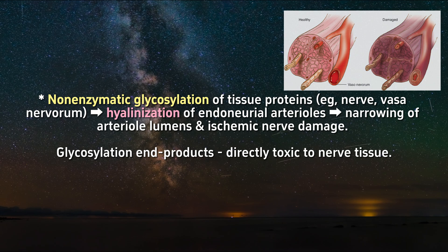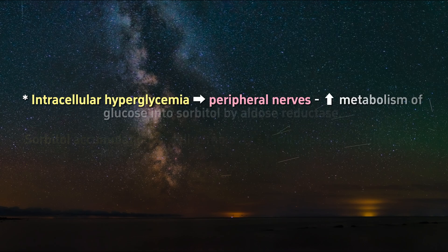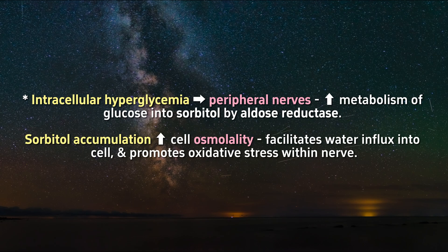Additionally, glycosylation end products are directly toxic to nerve tissue. Intracellular hyperglycemia in peripheral nerves results in increased metabolism of glucose into sorbitol by aldose reductase. Sorbitol accumulation increases cell osmolality, facilitates water influx into the cell, and promotes oxidative stress within the nerve.